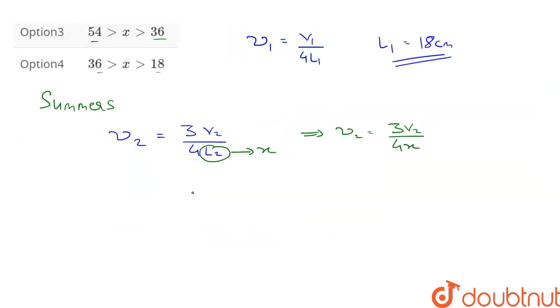Now since both are resonance frequencies, nu1 is equal to nu2. This means that V1 upon 4 into L1 or 18 cm is equal to 3V2 upon 4 into x.